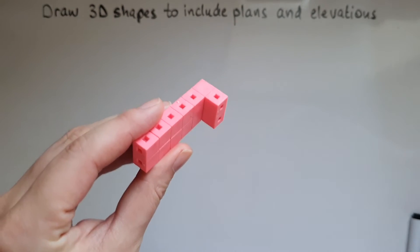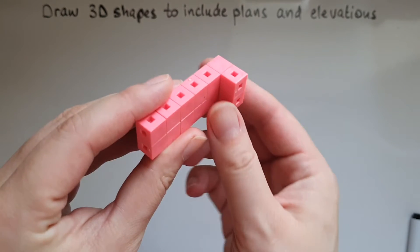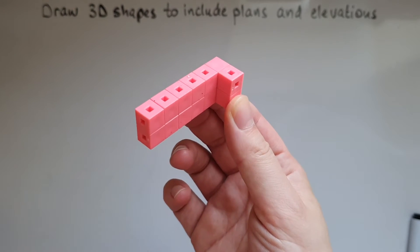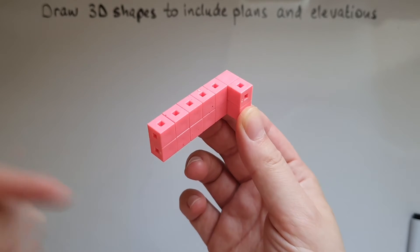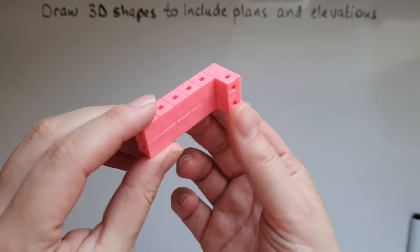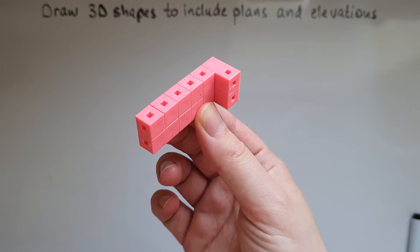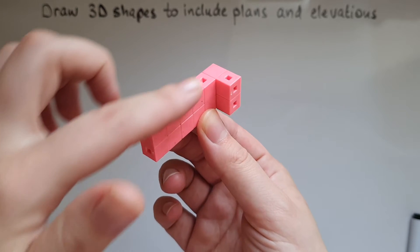So we'll take them in turn. You'd have a picture of this 3D shape given to you for example. A plan is what you can see from the top.